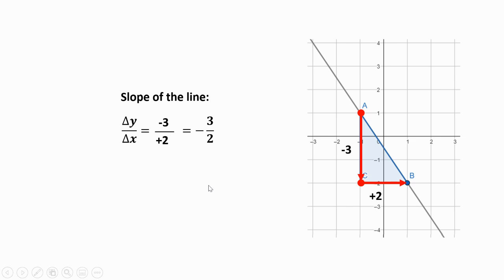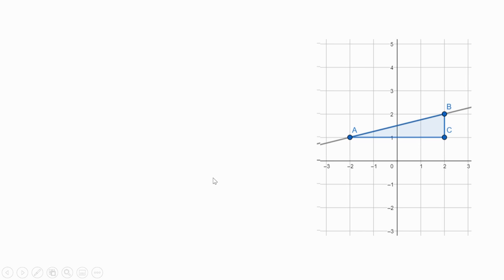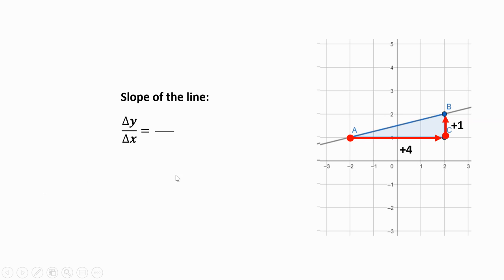Looking at this one, from left to right it is increasing. I'm going to put my slope triangle in there and count from left to right: one, two, three, four to the right, and then just one going up. The vertical change, delta y, goes on the numerator, and the horizontal change goes in the denominator. That gives us one over four.